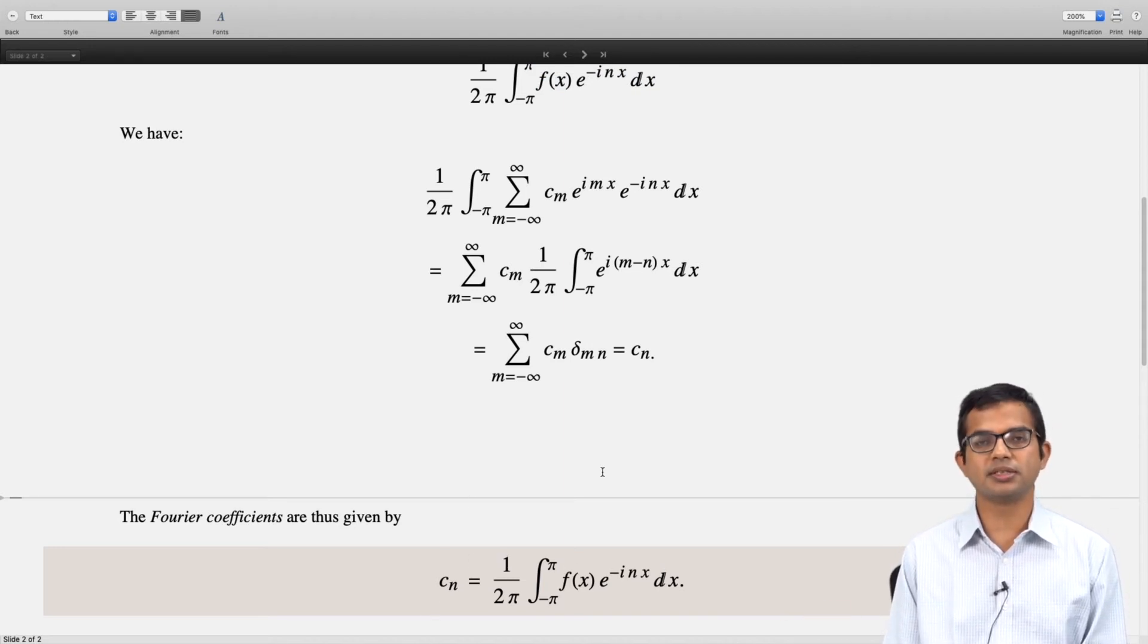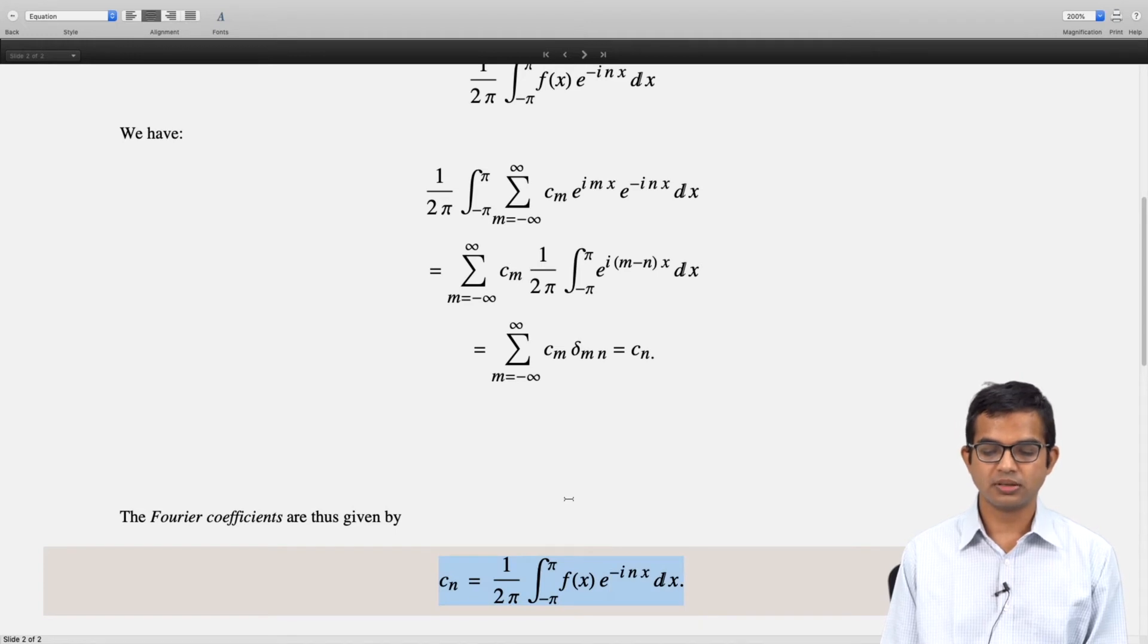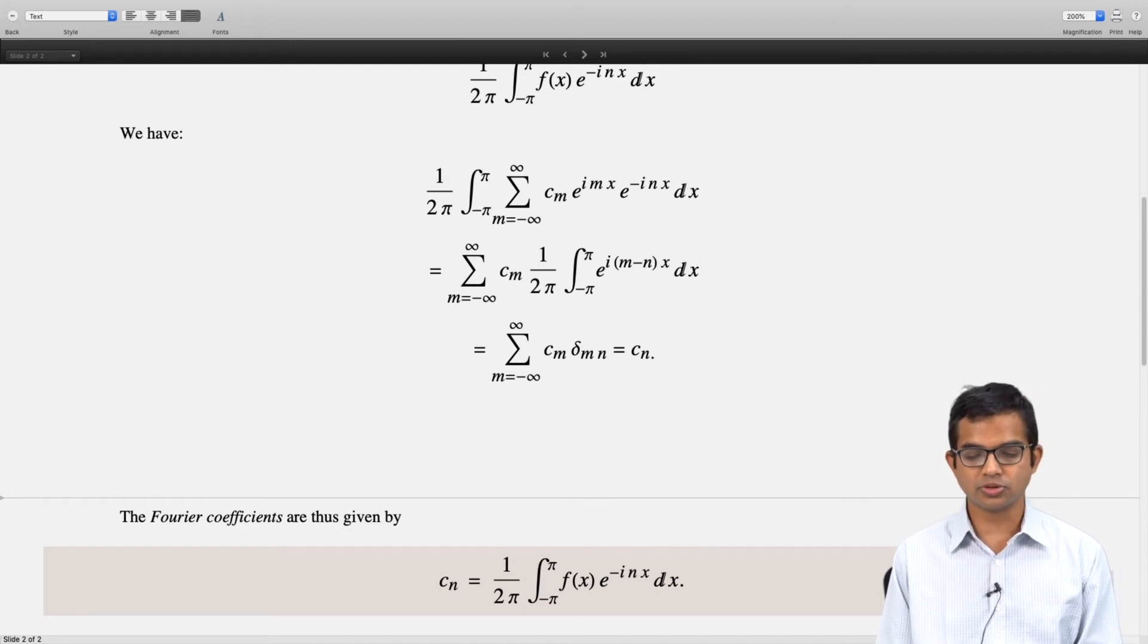The advantage with this formulation is that it is just one single expression to remember: cₙ. You can argue for it and directly work it out whether you are doing it with the sine-cosine approach or with the cₙ if you have understood the logic.